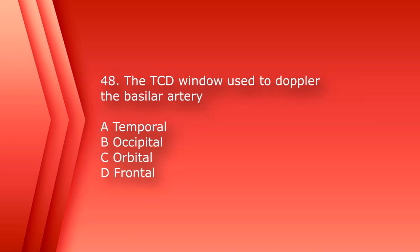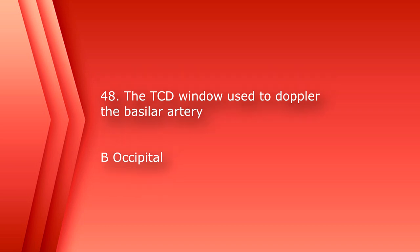Number 48: the TCD window used to Doppler the basilar artery is A. Temporal, B. Occipital, C. Orbital, or D. Frontal. The answer is B, occipital.